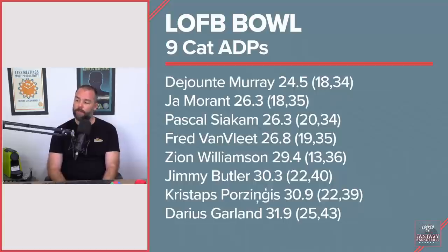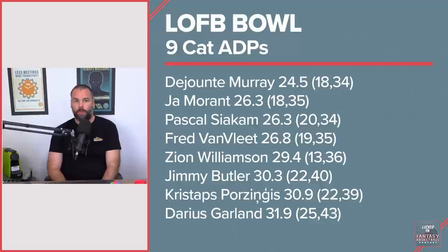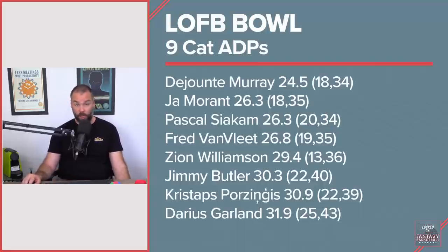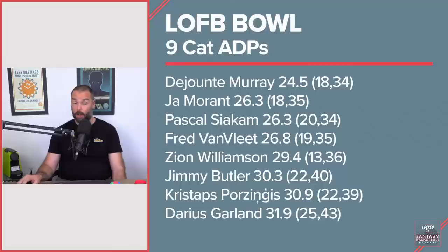Jimmy Butler at 30.3, never got higher than 22. Per game he was better than that last season, but the consistent missed time hurts, and he went as far down as 40. I was surprised to see Porzingis at 30.9 — this was before he hurt his ankle. He had a highest pick of 22 and a lowest of 39. I would love him at 39; 22 is high.